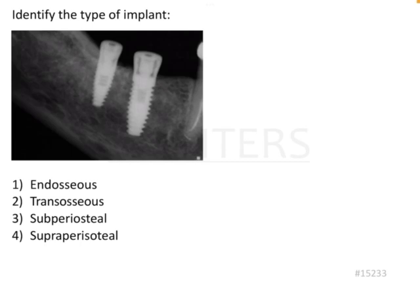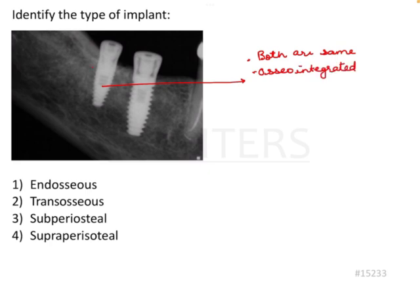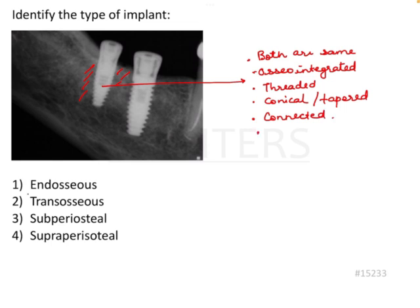The question is to identify the type of implant. In the image we have an IOPA with two implants. Both are identical and both are osseointegrated in the bone — meaning we have bone around the implant totally. They are threaded, they are conical or tapered, and they are not connected — they are independent with no mesh connecting them.